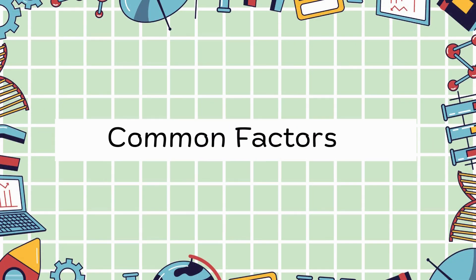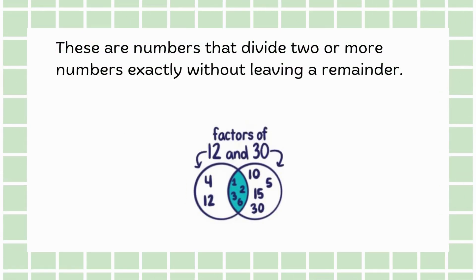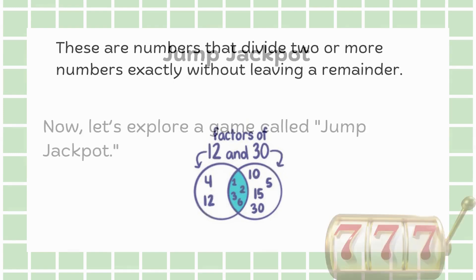Moving on, let's talk about common factors. These are numbers that divide two or more numbers exactly without leaving a remainder. For example, the factors of 12 include 1, 2, 3, 4, 6 and 12. Similarly, the factors of 30 are 1, 2, 3, 5, 6, 10, 15 and 30.